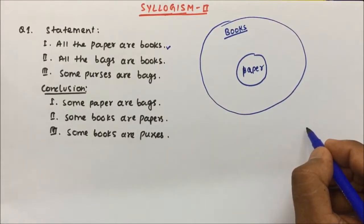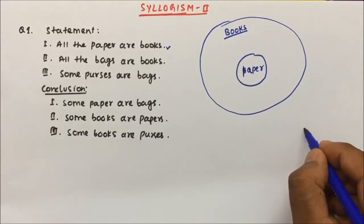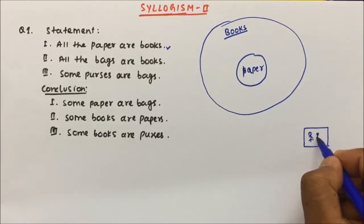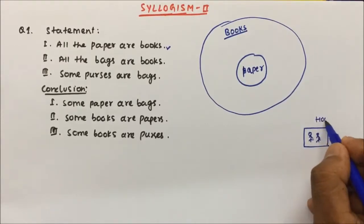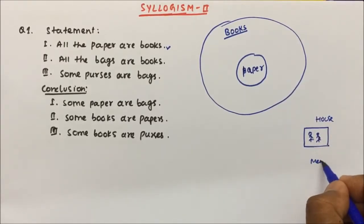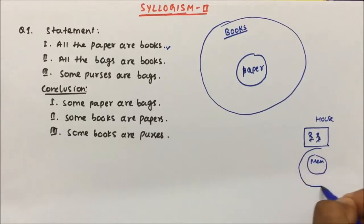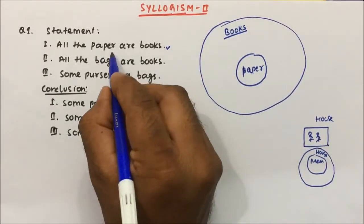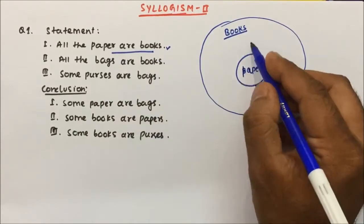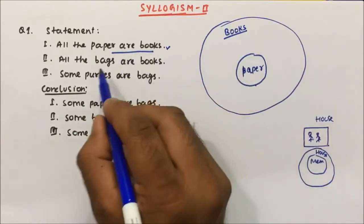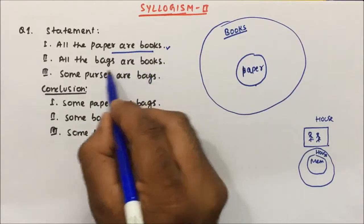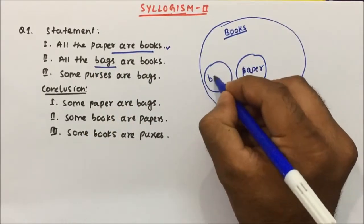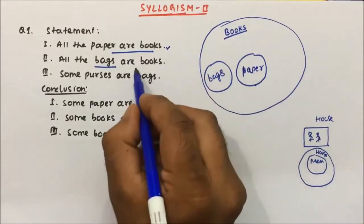In Serialism Part 1, I had explained that if all the members are inside the house, how you draw it — members are inside the house. Same thing here: all the papers are books, so all the papers will be inside the books. Now all the bags are books, so bags are also books — I will make a diagram here, all the bags are also inside books.